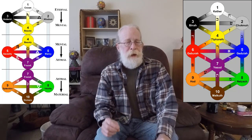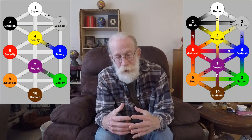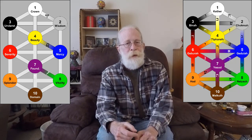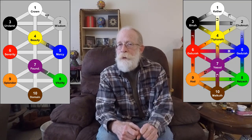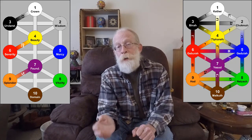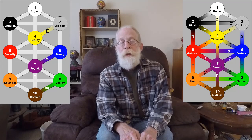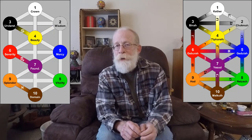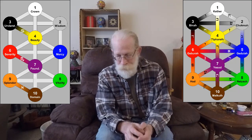The top right on the diagram is a fire sign — Aries, Leo, and Sagittarius. The top left are earth signs: Taurus, Virgo, and Capricorn. Then the bottom right are the air signs: Gemini, Libra, and Aquarius. Then the bottom left are the water signs: Cancer, Scorpio, and Pisces.